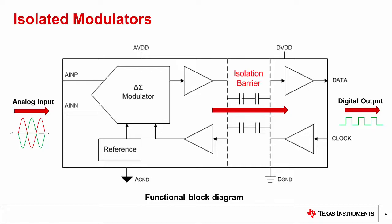Let's also take a quick look at the isolation barrier. TI's capacitive isolation technology offers two different types of isolation: basic and reinforced. Basic isolation is implemented with a single capacitive barrier, while reinforced uses two capacitive barriers in series. For more information on these two types of isolation, please visit ti.com/isolation and click on the isolated ADCs link.